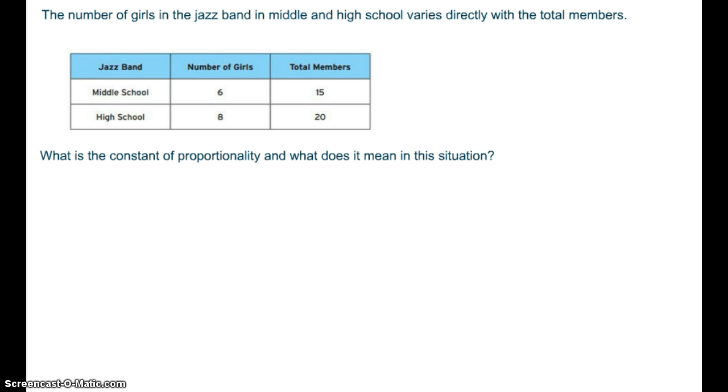The number of girls in the jazz band in middle and high school varies directly with the total members. What is the constant of proportionality and what does it mean in this situation? So make sure that you have this table written down as well.